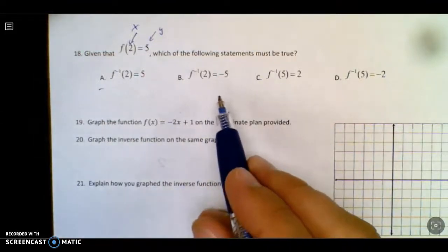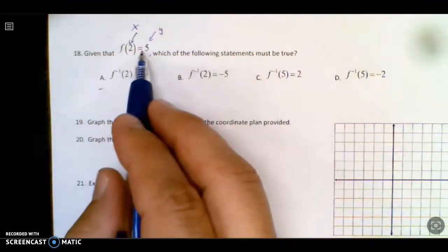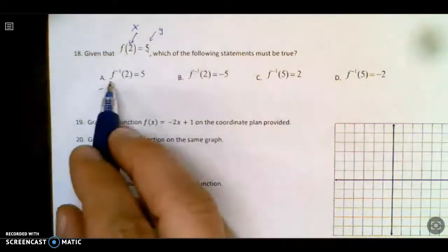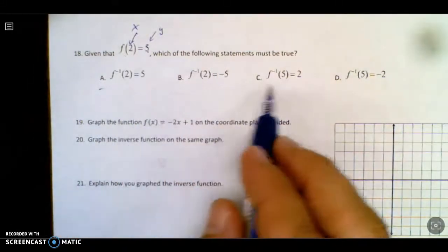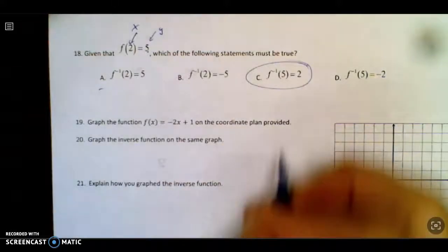So which of the following statements must be true of the inverse? Well, since it does the old switcheroo, I would be looking for one that has an input of 5 and an output of 2. So I searched through here, winner, winner, chicken dinner.